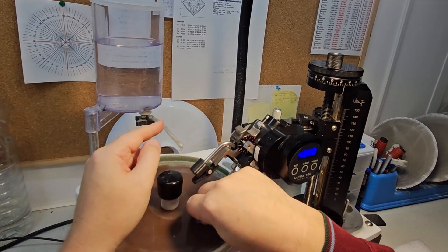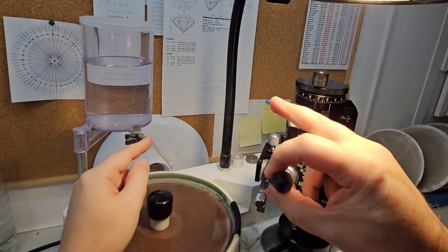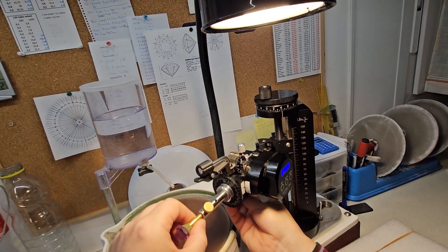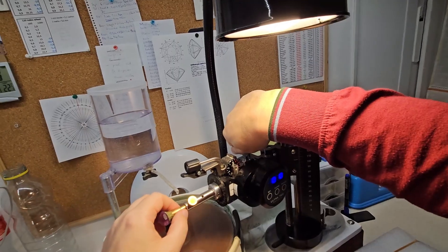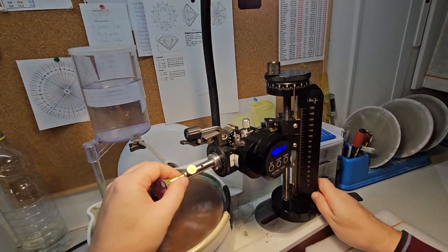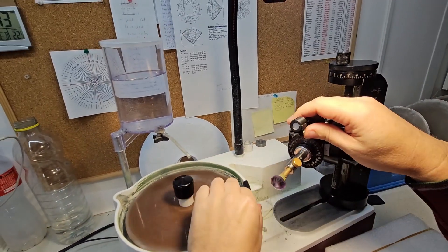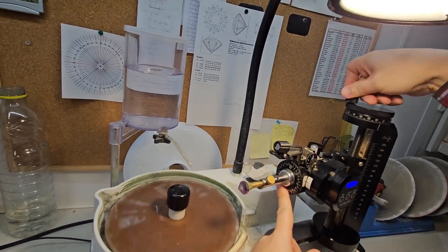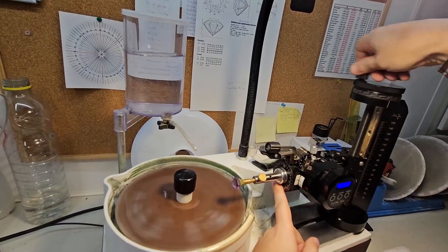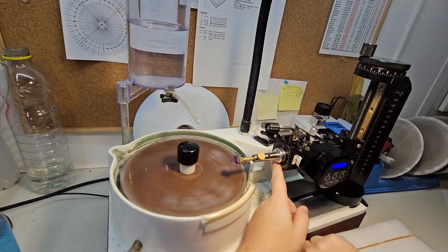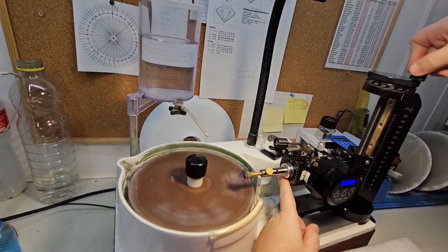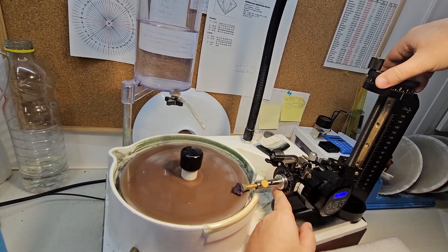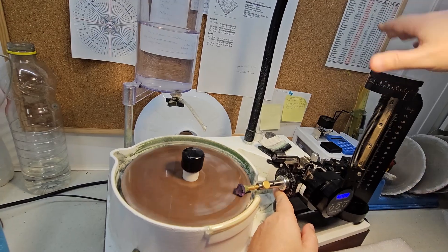For example, when working at 90 degrees on the girdle. Let me show you how it works. Let's set the angle to 90 degrees. We'll change the direction of the disk's rotation to avoid splashing. And now, let's get started with the girdle.